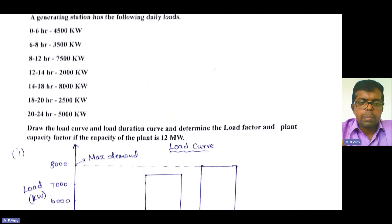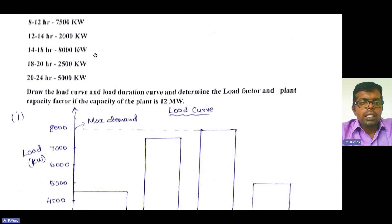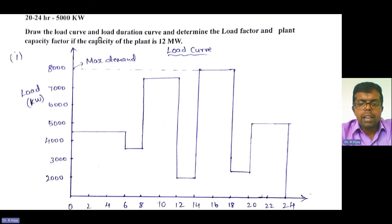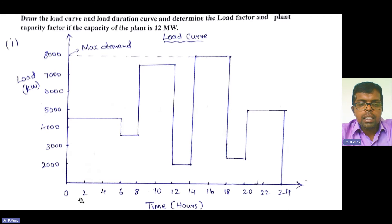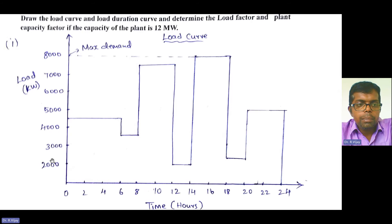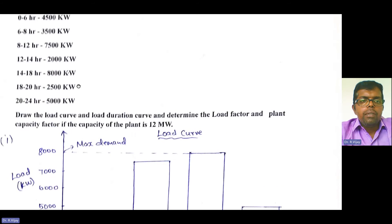The difference between load curve and load duration curve we have seen in detail in our previous classes. To draw the load curve, we set up two axes — time in hours on the x-axis, taken as 0, 2, 4, 6, 8, 10, 12, 14, 16, 18, 20, 22, up to 24. On the y-axis, load in kilowatts, taken as 2000, 3000, 4000, 5000, 6000, 7000, and 8000. You need to choose the scale based on the problem data.